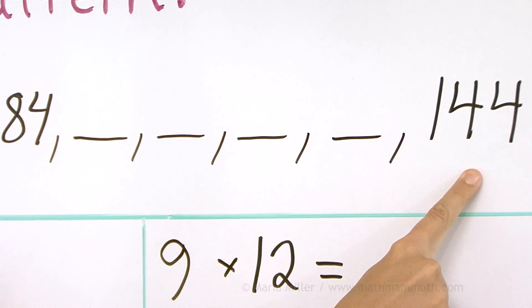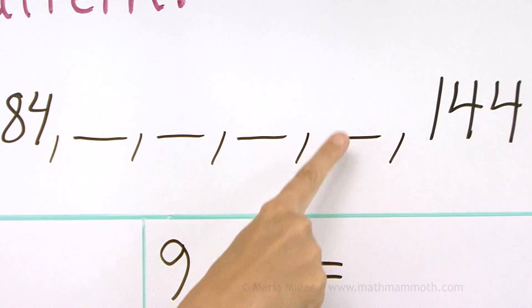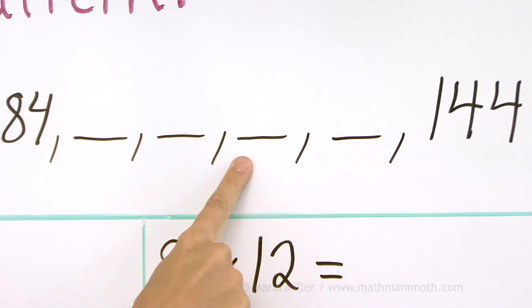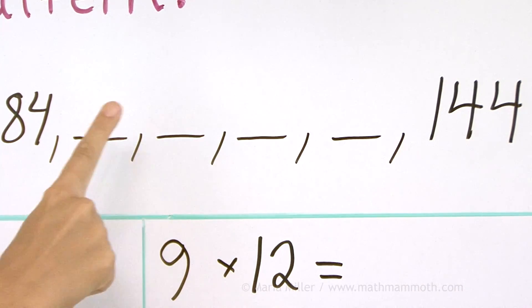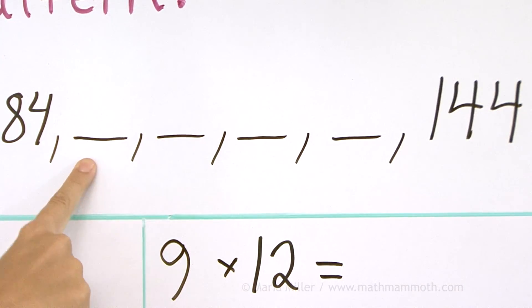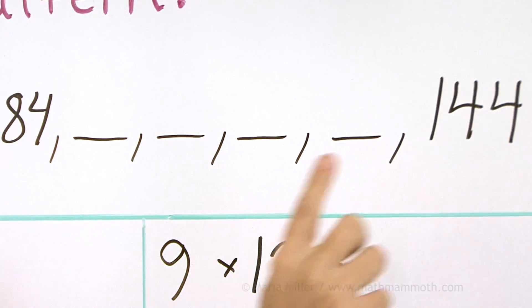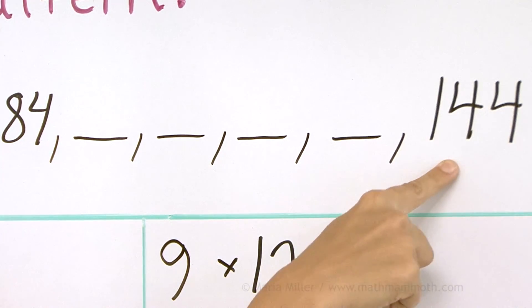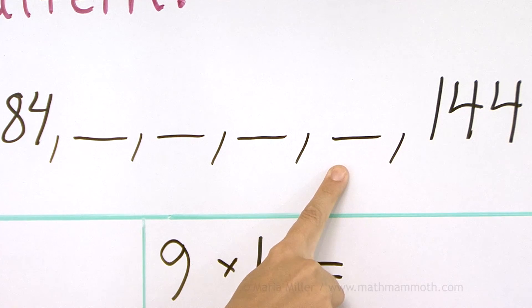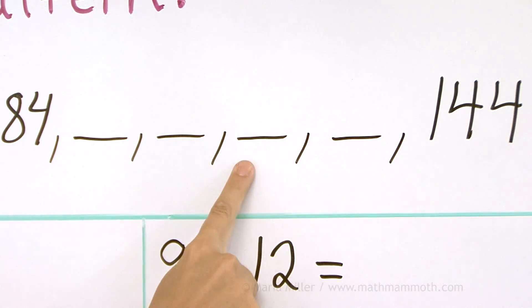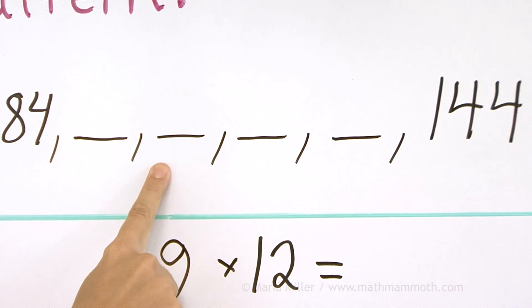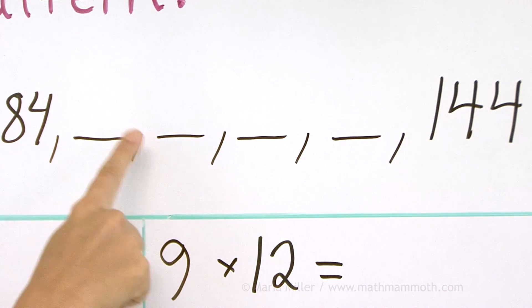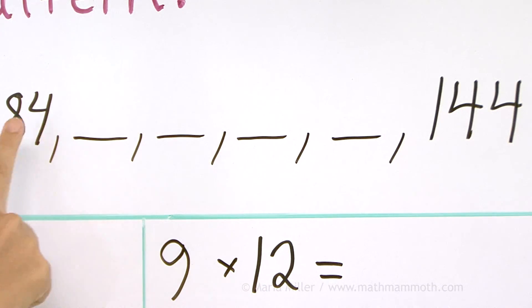And backwards: 144, 132, 120, 108, 96, 84. Your turn: 144 ... 84.